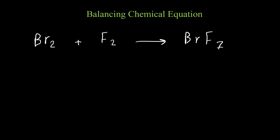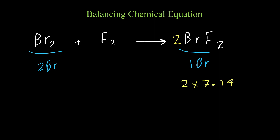Let's work on the reaction of bromine and fluorine producing bromine heptafluoride. On the left side we have two bromine atoms and on the right side we have one bromine, so I put two in front of BrF₇. Now balancing fluorine: on the right side we have two times seven equals fourteen fluorine, and on the left side we have only two fluorine, so I put seven in front of F₂. This equation is now balanced.